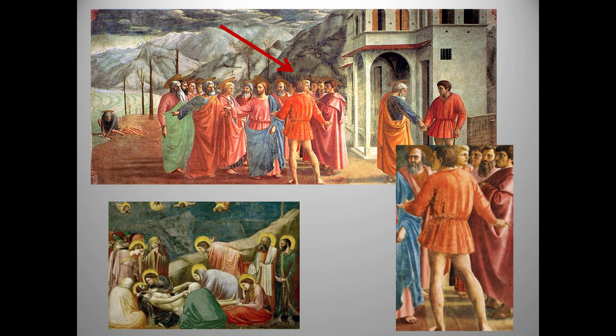Both the Giotto painting and the Masaccio painting use atmospheric perspective. Objects further away are blurrier, softer in value, and bluer. But Masaccio's gradations are subtler and more realistic — he is taking nature as his model. But this isn't the really big difference.